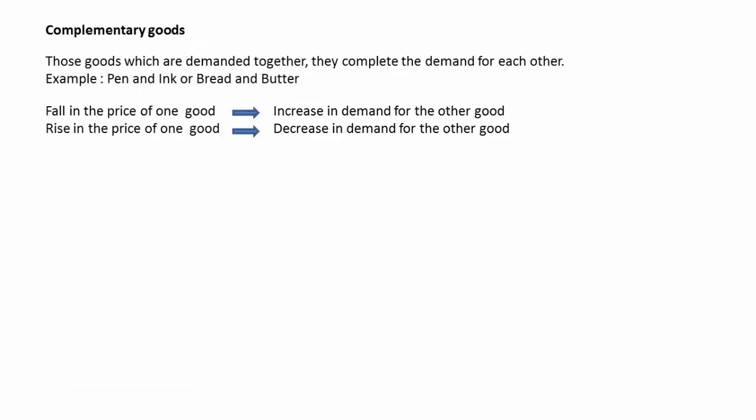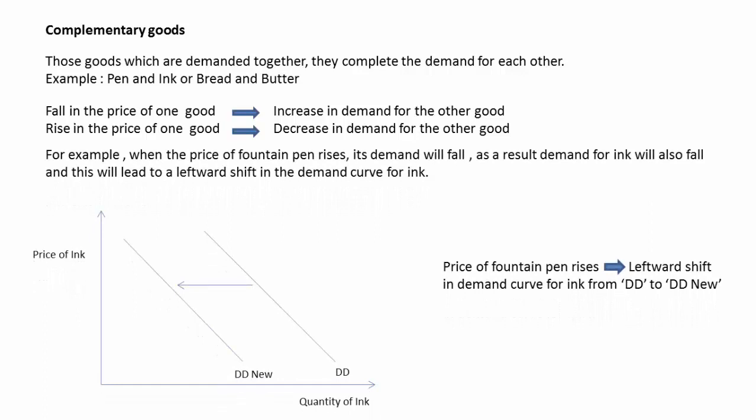The second type of related goods is complementary goods — those which are demanded together and complete the demand for each other, such as pen and ink, or bread and butter. In the case of complementary goods, a fall in the price of one causes an increase in demand for the other, and a rise in the price of one causes a decrease in demand for the other. For example, when the price of a fountain pen rises, its demand falls. As a result, demand for ink will also fall, leading to a leftward shift in the demand curve for ink. If the price of fountain pen falls, its demand rises, and demand for ink also rises, leading to a rightward shift.